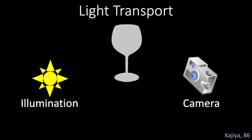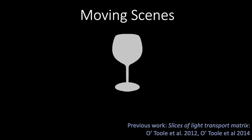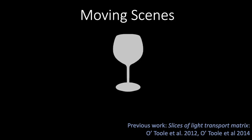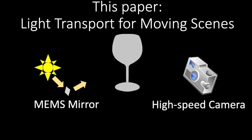We present light transport applications with a fast-flying dot projector. Light transport is a fundamental concept in computer graphics that captures all of the interaction of light from a source to a camera. This paper is about dynamic scenes. Our idea is to use a high-speed camera and a MEMS mirror-modulated source to capture dynamic light transport.